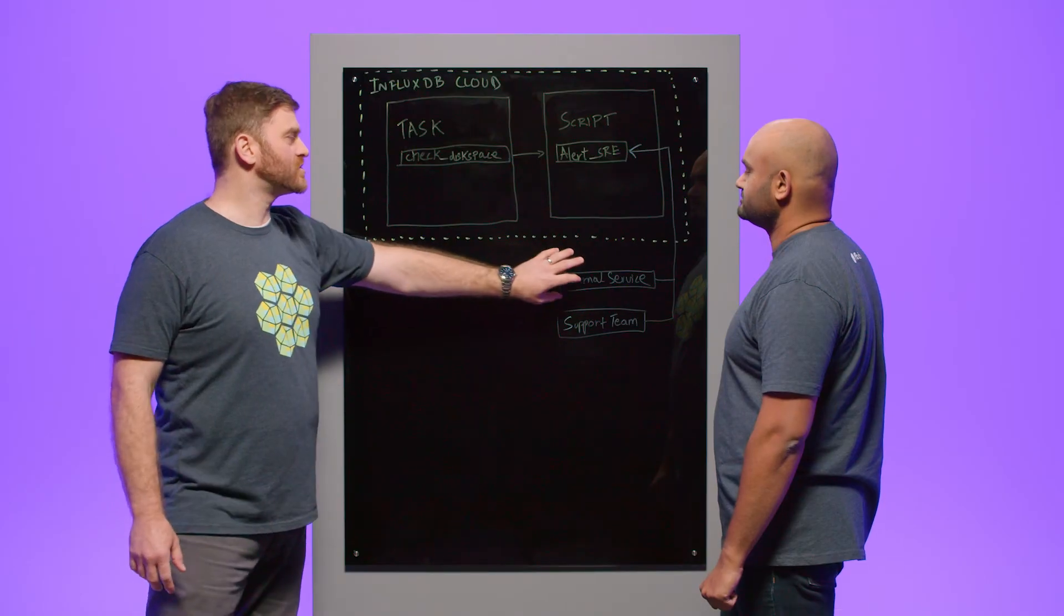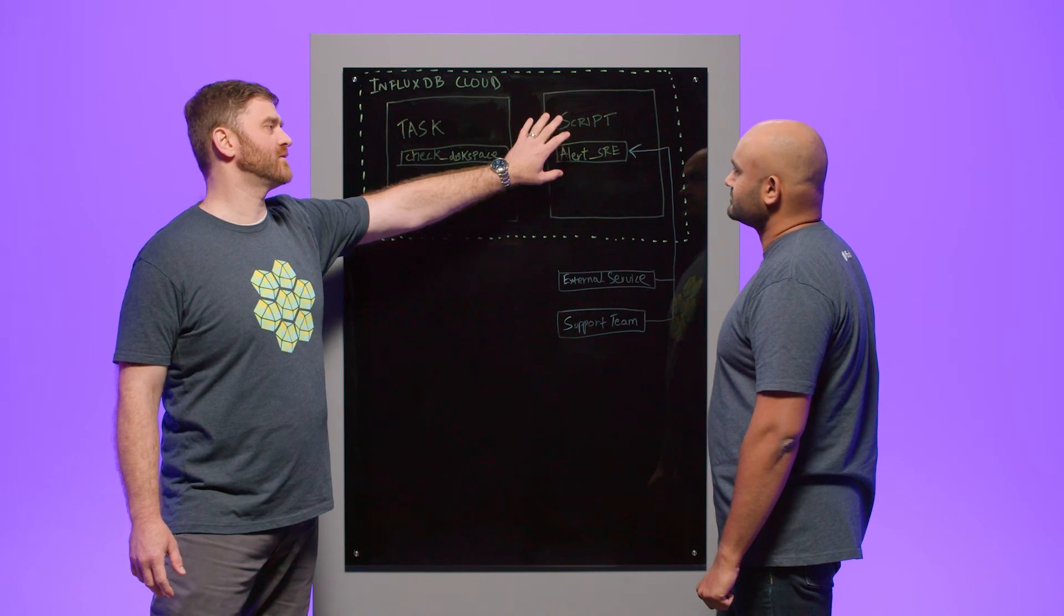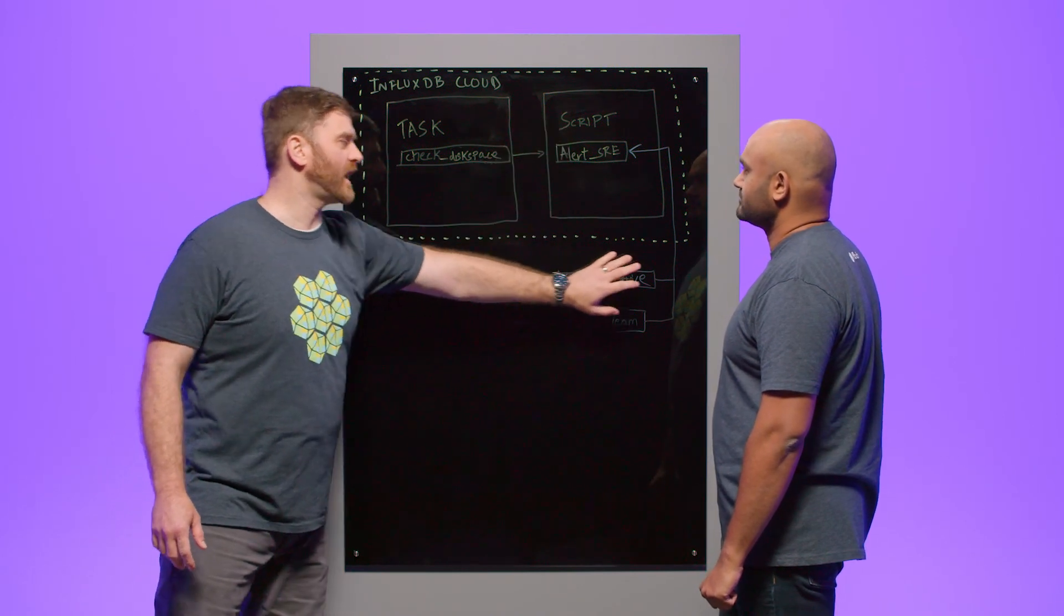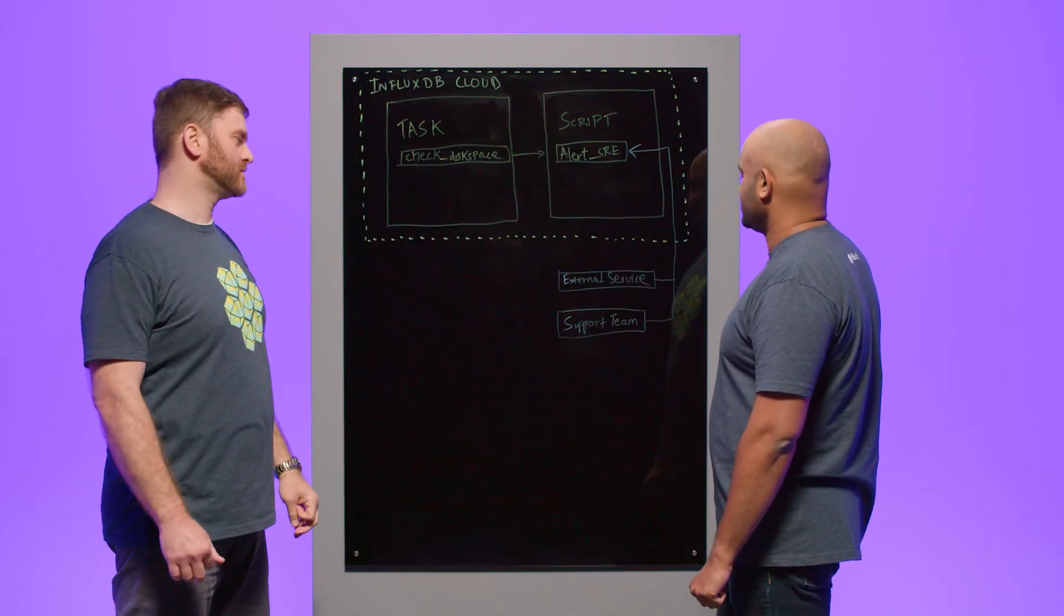Okay, so then any external service can just invoke that URL. Right. So if you had some different database or some other different monitoring service or something else that supports your application, it can share the same policy that you've implemented inside of InfluxDB cloud because it can access it through this external URL.